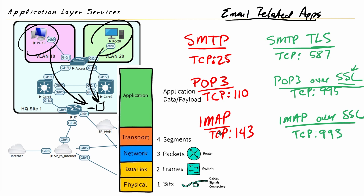A common question is whether we need to memorize all these well-known ports. There are thousands of application layer services and we don't need to memorize all their ports — but the most common ones I'm sharing in these videos, I would recommend committing to memory. That way, as you're working in networks with these application layer services, you'll know the well-known ports in case you need to filter, forward, or treat them differently on the network.